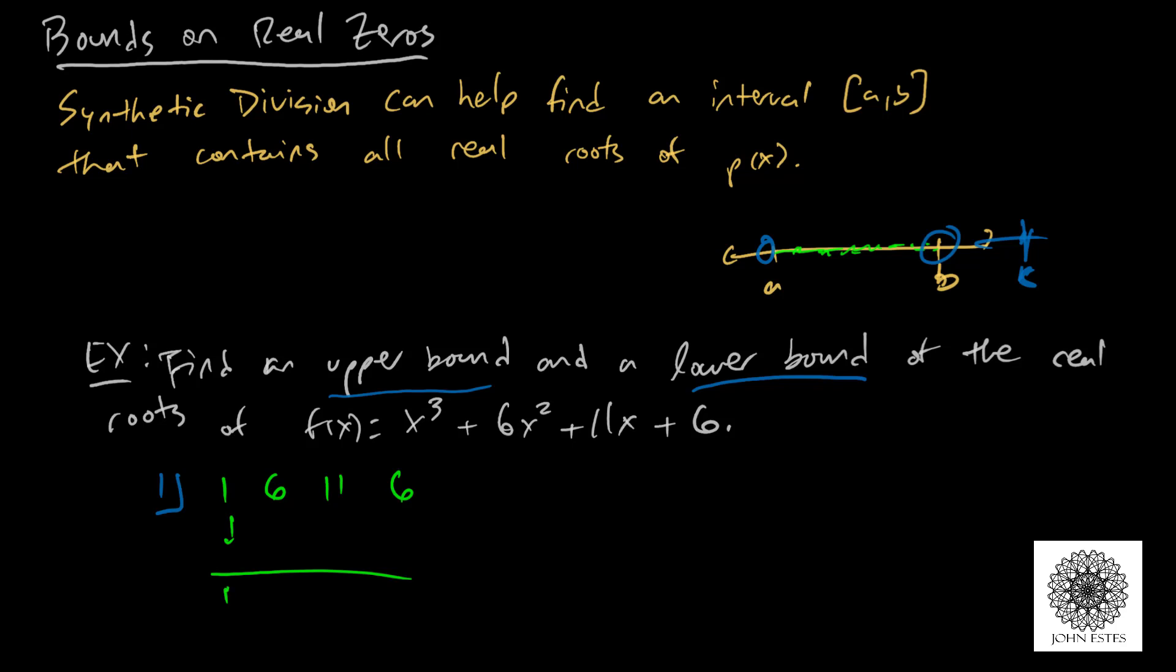We bring down the 1. 1 times 1 is 1, then we add, so that's 7. 7 times 1 is 7. 11 plus 7 is 18. 18 times 1 is 18. And 18 plus 6 we get 24.